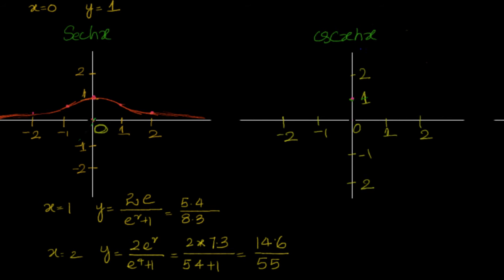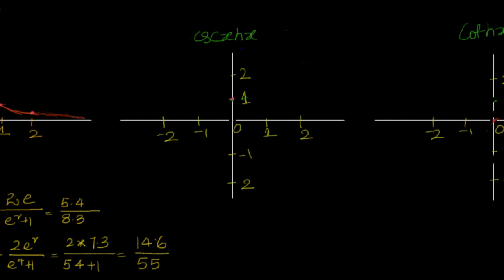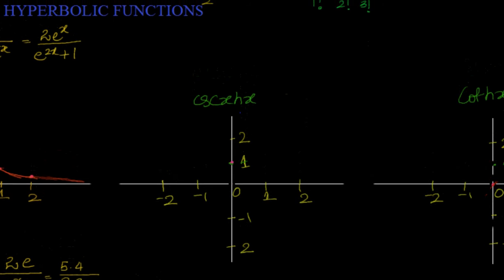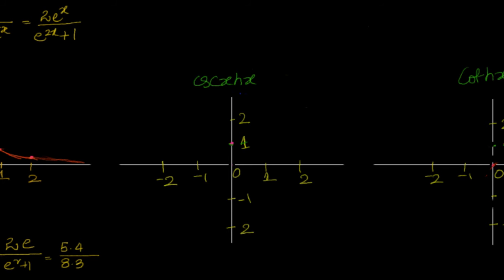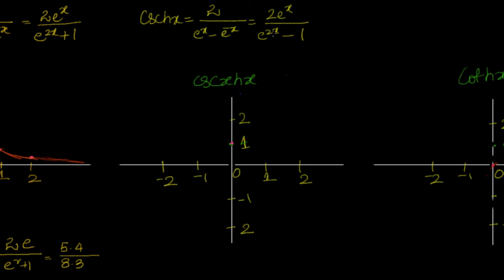Now let's move to hyperbolic cosecant x. What is csch(x)? csch(x) equals 1 by sinh(x), that is 2 by (e^x - e^(-x)). If x equals 0, the denominator becomes 0, so this is undefined. I cannot have x equal to 0.